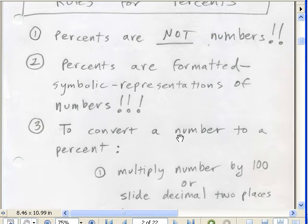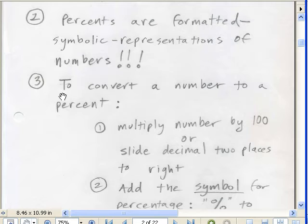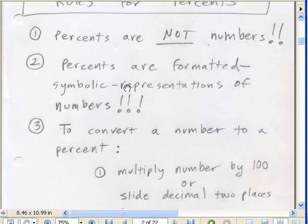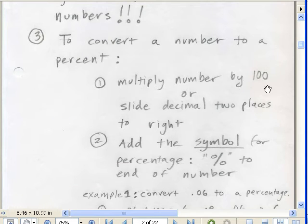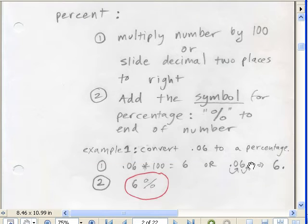Rule number one, they're not numbers. Rule number two, they're formatted symbolic representations. Three, to convert a number to a percent, multiply a number by 100 or slide the decimal two places to the right. Second, you add a symbol for percentage, percent, to the end of the number. Here's example one.